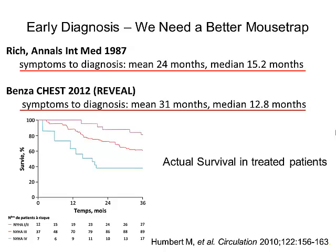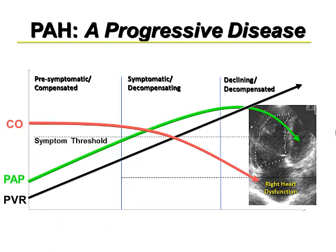The challenge with pulmonary hypertension — two studies 25 years apart show there's been no progress in how long it takes to diagnose patients. It still takes about two years from onset of symptoms until diagnosis. Survival is related to WHO class: quite a lot better if you're class 1 or 2, and quite poor if you're class 4. Our diagnosis relies on hemodynamic correlates of the interplay between PAP, PVR, and cardiac output, and we hope to catch patients before decompensated right heart failure.